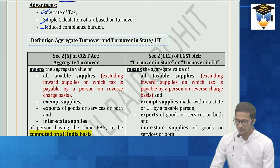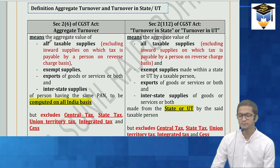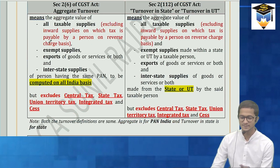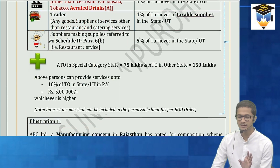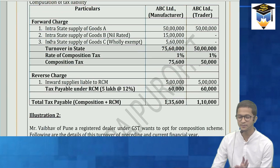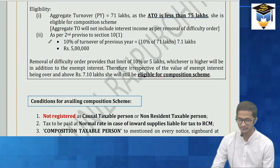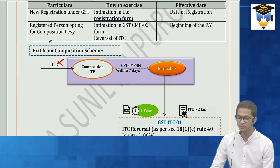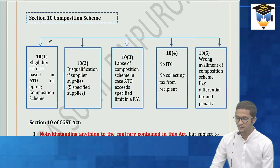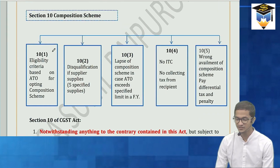Now let me give you the structure of composition scheme in the CGST Act. The composition scheme is section 10, and it has five subsections. Let me explain what each subsection covers before we go into the definition of aggregate turnover.